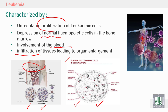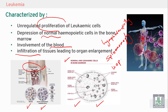These abnormal cells go to the blood and infiltrate tissues other than the bone marrow, leading to organ enlargement — lymphadenopathy (enlargement of lymph nodes), splenomegaly (enlargement of the spleen), hepatomegaly (large liver). The malignant cells can also go to the skin, the CNS, the testes, and any organ in our body.